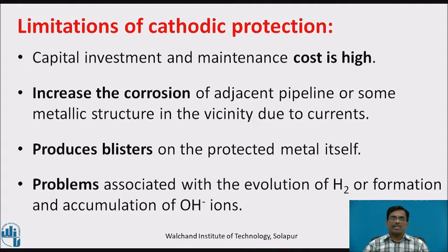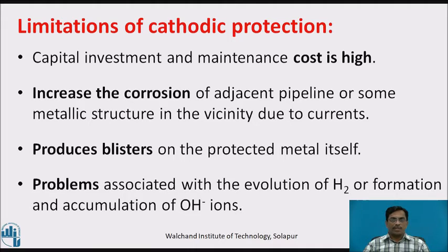Limitations of cathodic protection: capital investment and maintenance cost is very high. It can increase corrosion of adjacent pipelines or metallic structures in the vicinity due to stray currents. It also produces blisters on the protected metal itself, along with problems associated with hydrogen evolution and accumulation of hydroxide ions.